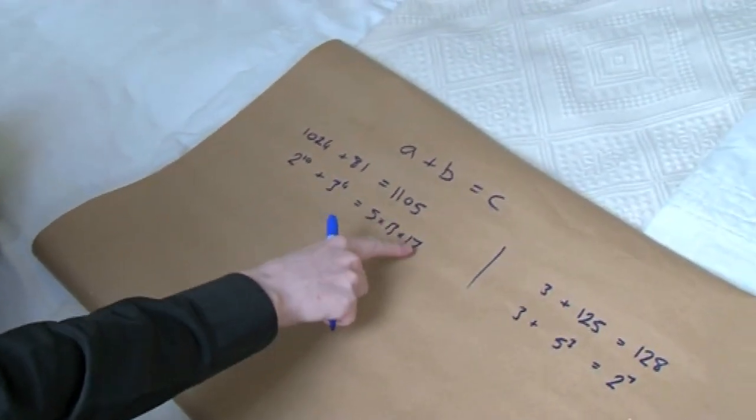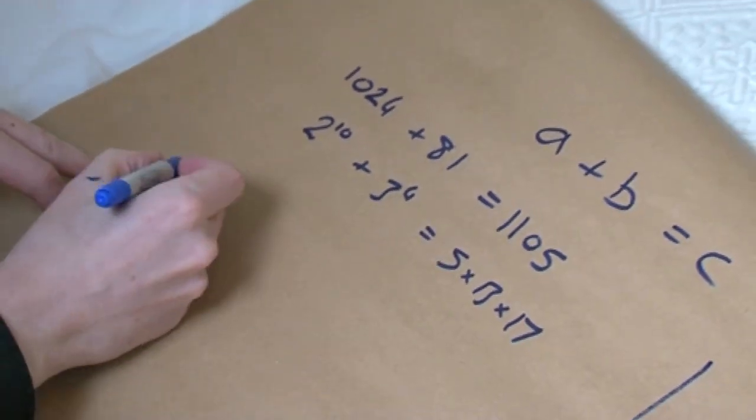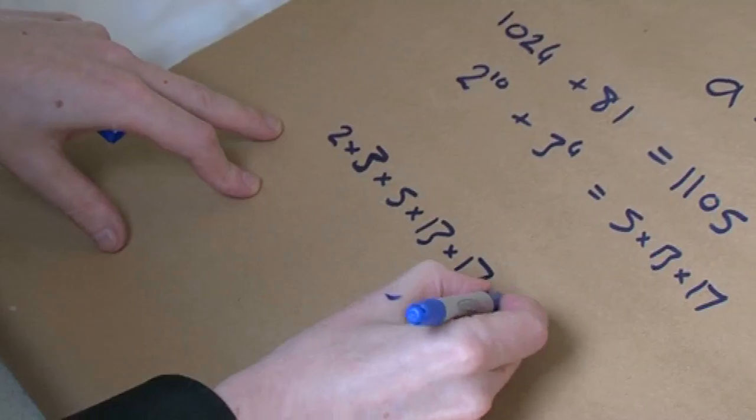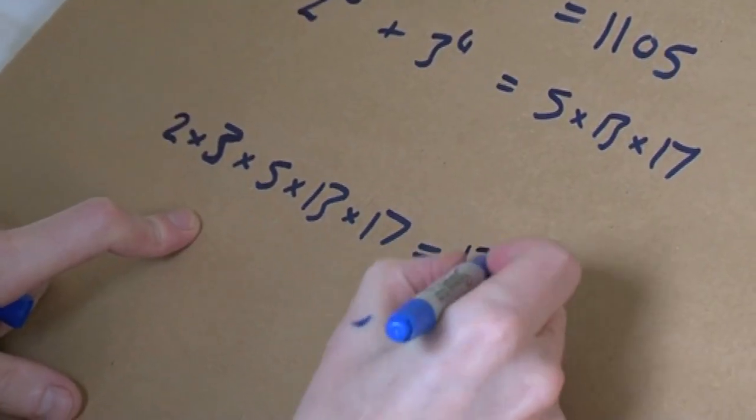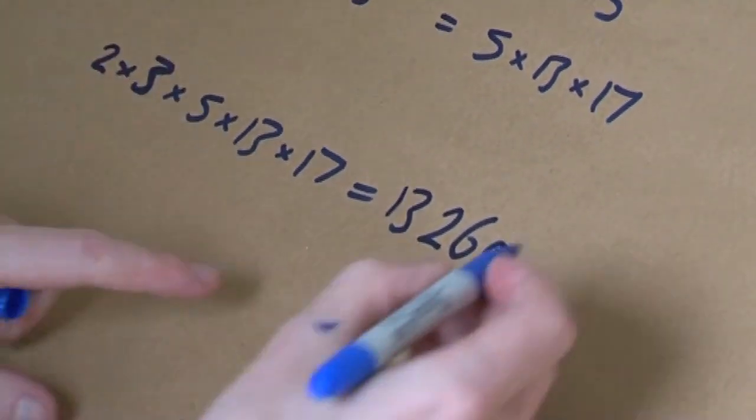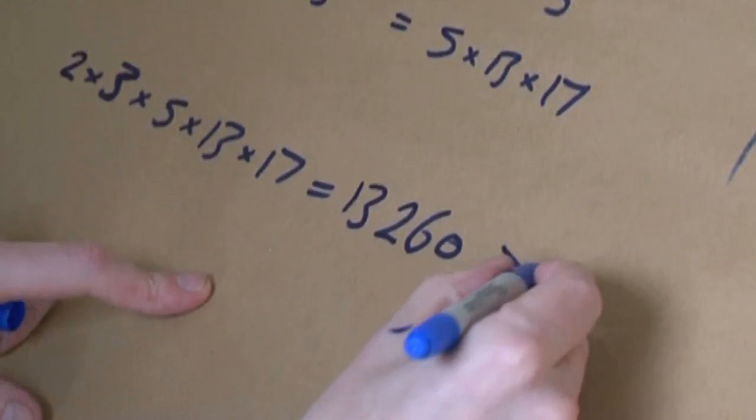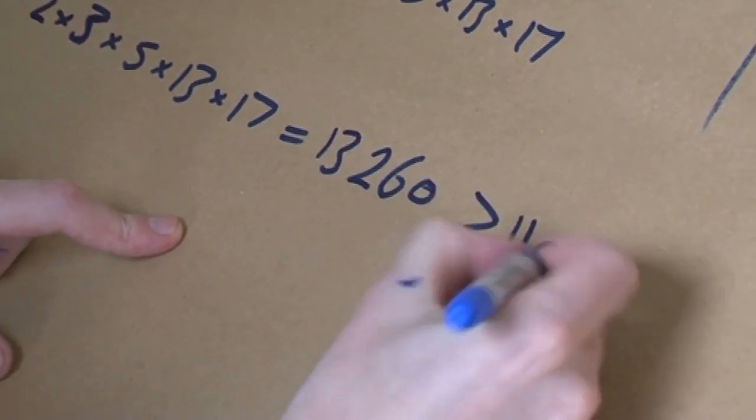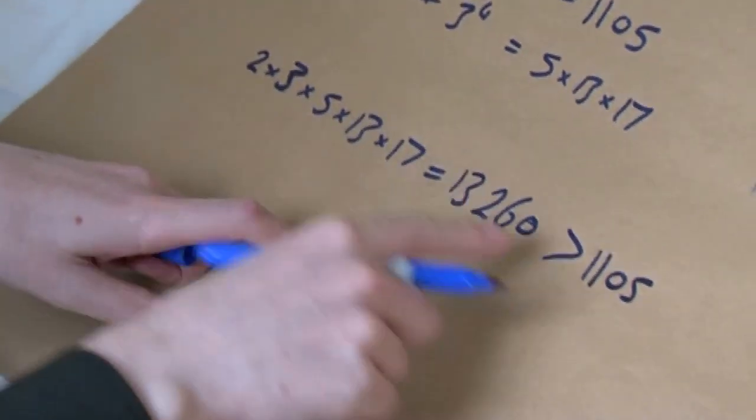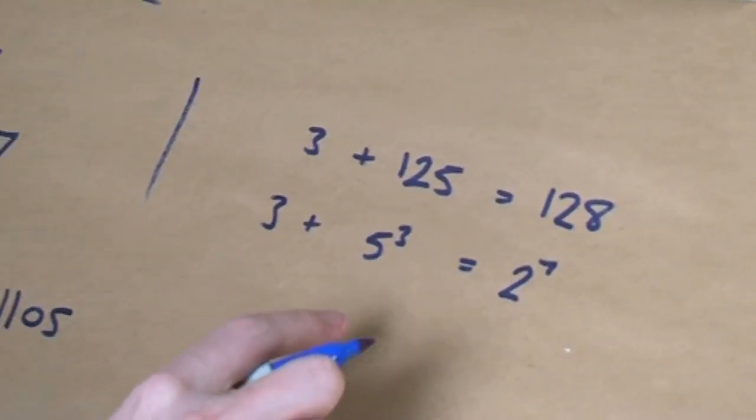So the technical way to say this is: times those primes together. So 2 times 3 times 5 times 13 times 17, and that equals 13,260. So it's a big number. And it's bigger than the right-hand side, which was this. That's what normally happens. If you do this, you get a bigger number.